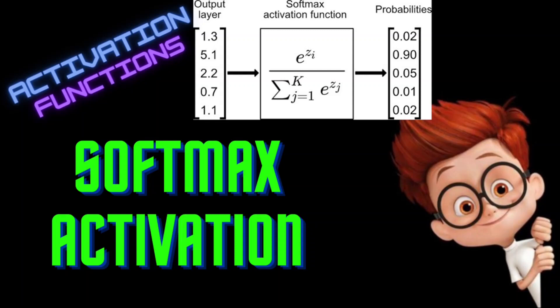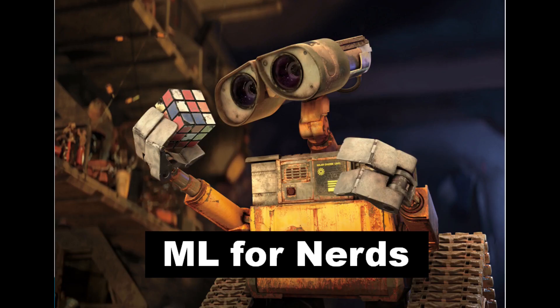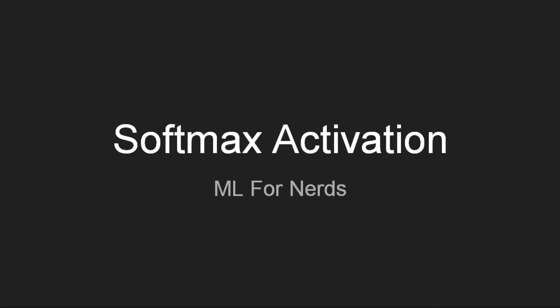What is so special about the Softmax activation function? How did it become the default activation function for multiclass classification? Hello everyone, my name is Siva and welcome to my channel. This is the 8th video of the series Neural Network from Scratch. From the last few videos, we have been discussing activation functions. We have already discussed sigmoid and tanh function and their use cases, which are used for binary classification. In this video, we will go through the Softmax activation function, which is used for multiclass classification.